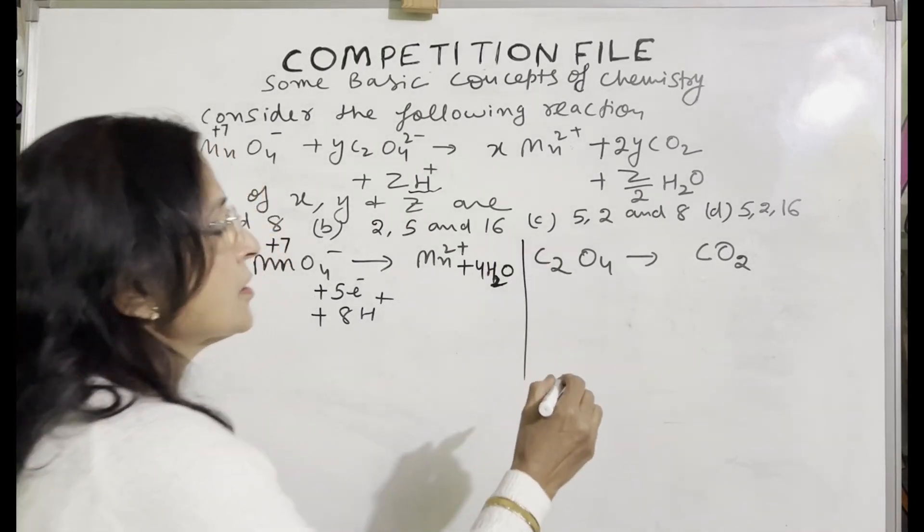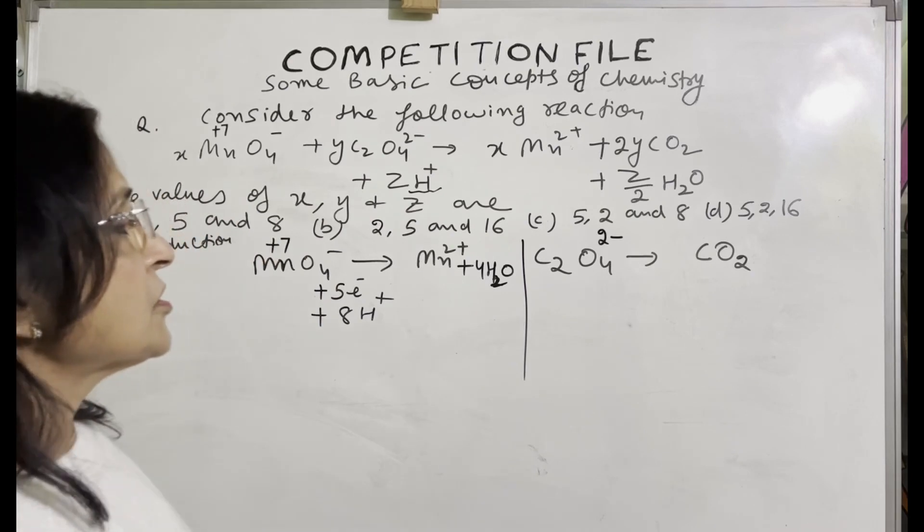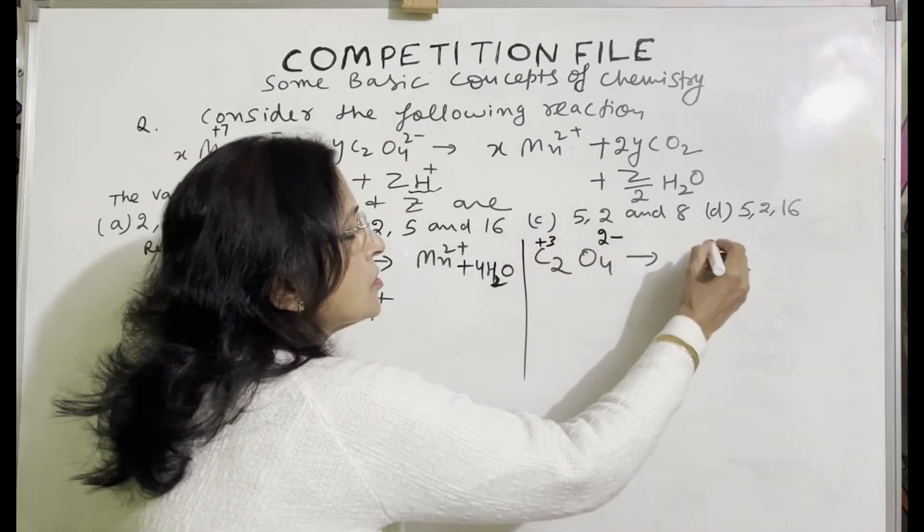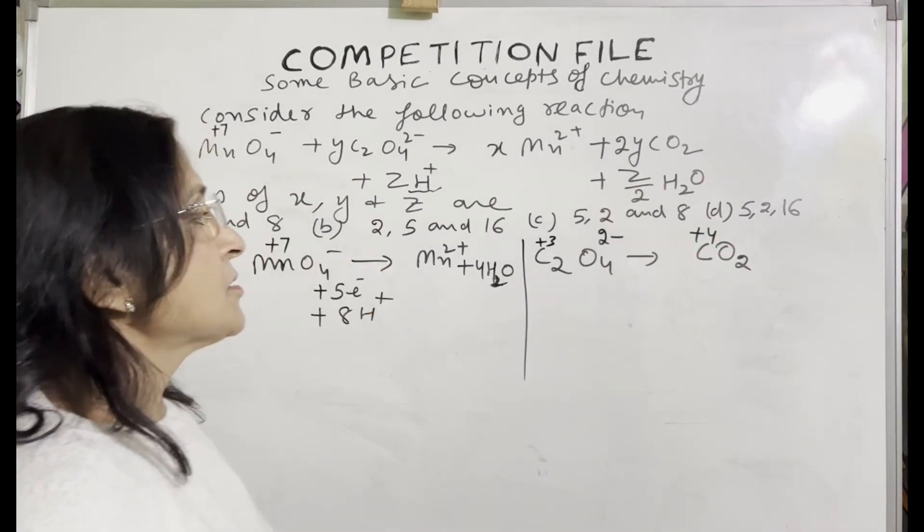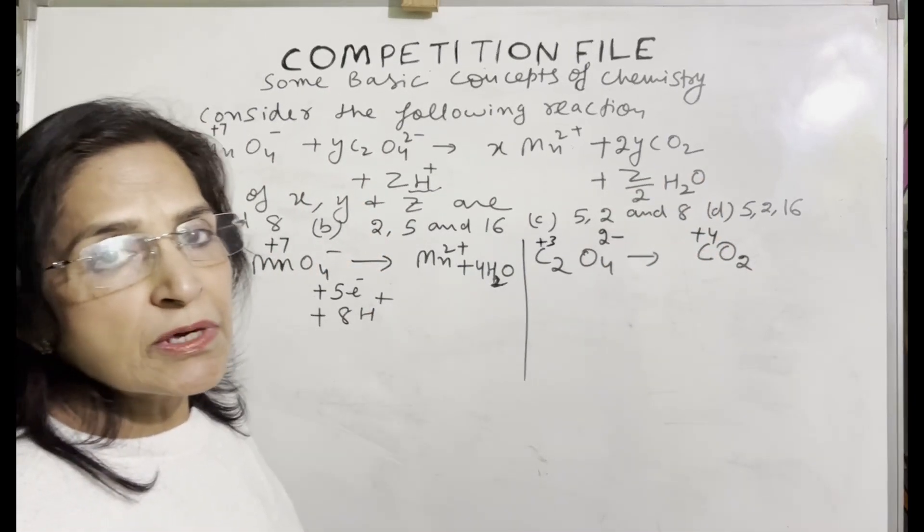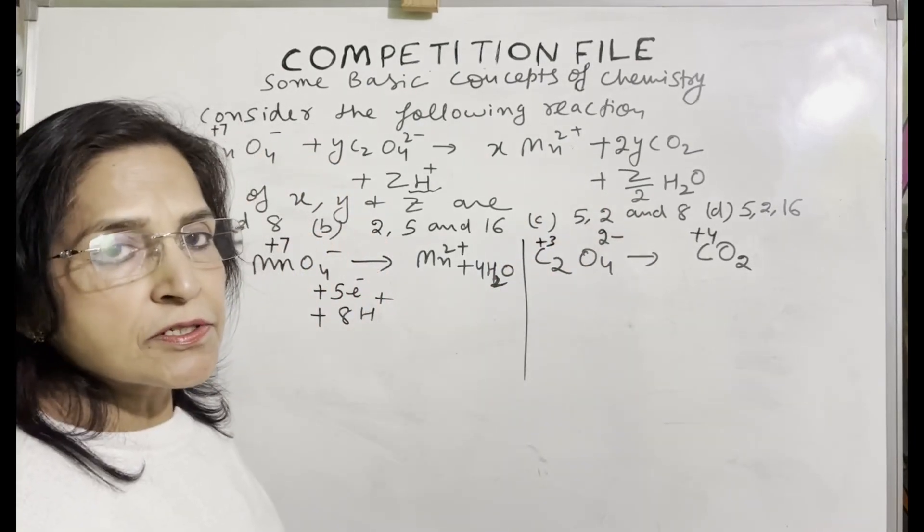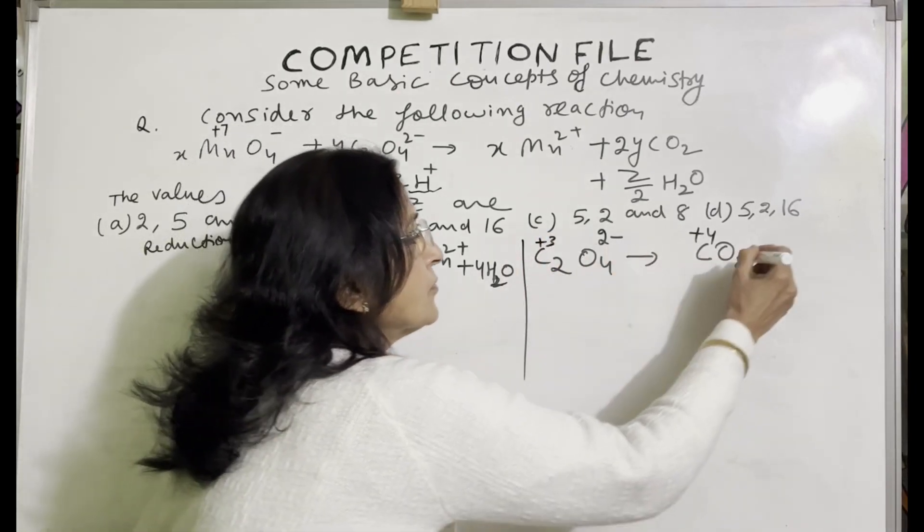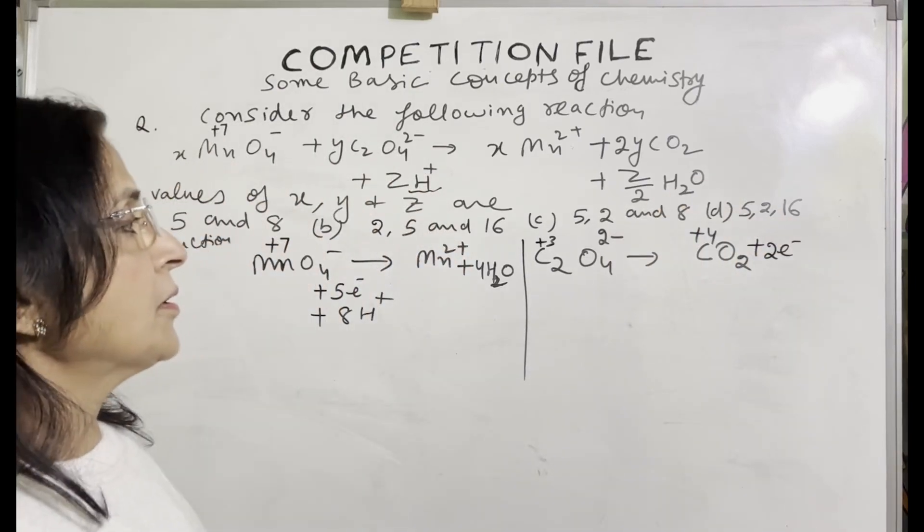Now in this equation, this is C2O4 2 minus. The oxidation state of carbon in oxalate ion is plus 3 and in CO2 the oxidation state is plus 4. Oxidation is taking place. Oxidation means losing of electrons. So for one carbon, the oxidation state changes from plus 3 to plus 4, so one electron is lost. Two atoms of carbon will lose two electrons, so we put two electrons here.